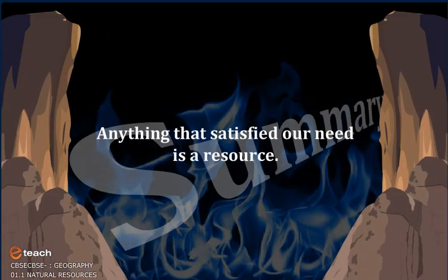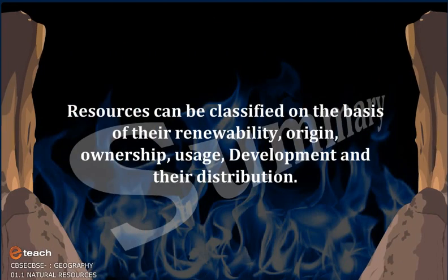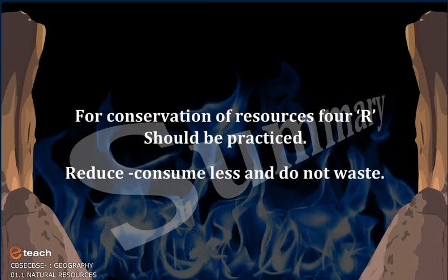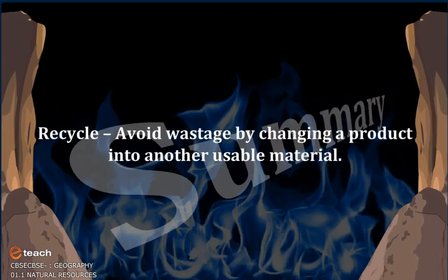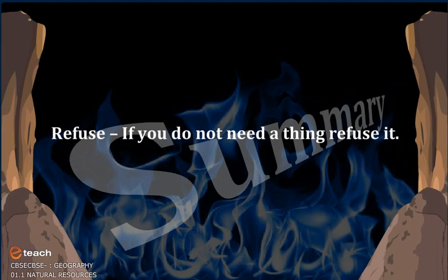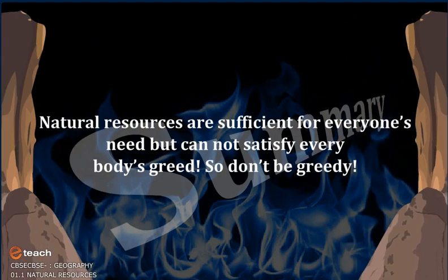Summary: Anything that satisfies our need is a resource. Resources can be classified on the basis of renewability, origin, ownership, usage, development, and distribution. For conservation of resources, 4R should be practiced: Reduce — consume less and do not waste; Reuse — use a product as many times as you can; Recycle — avoid wastage by changing a product into another usable material; and Refuse — if you do not need a thing, refuse it. Natural resources are sufficient for everybody's need but cannot satisfy everybody's greed. Keep studying and have fun!